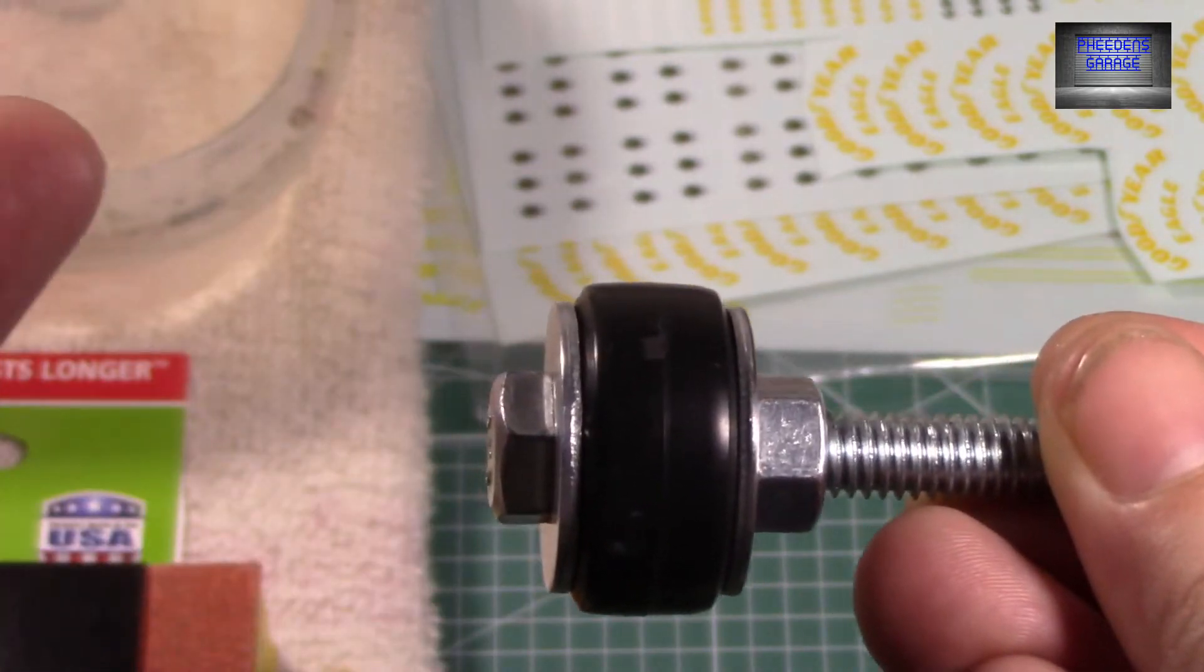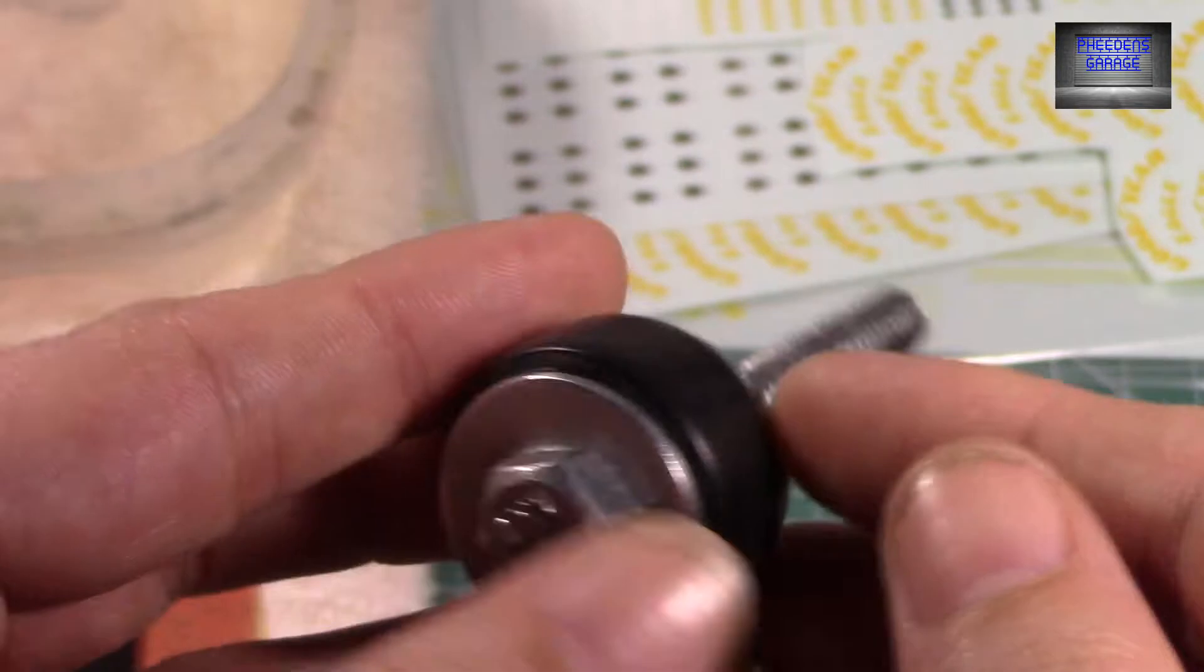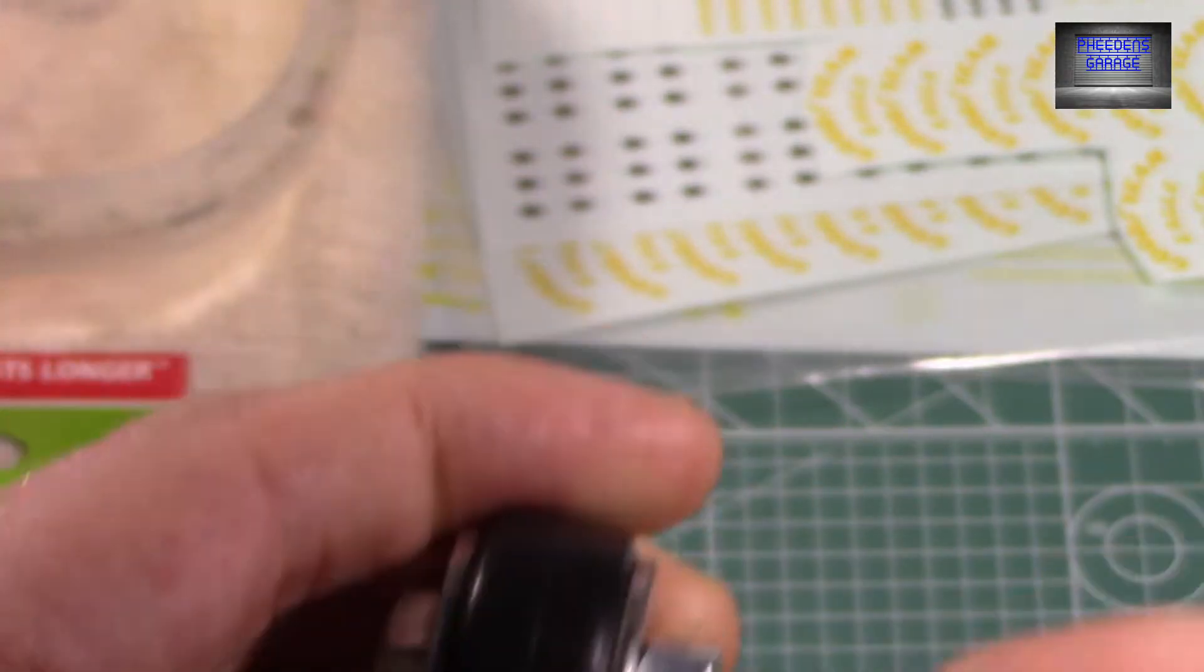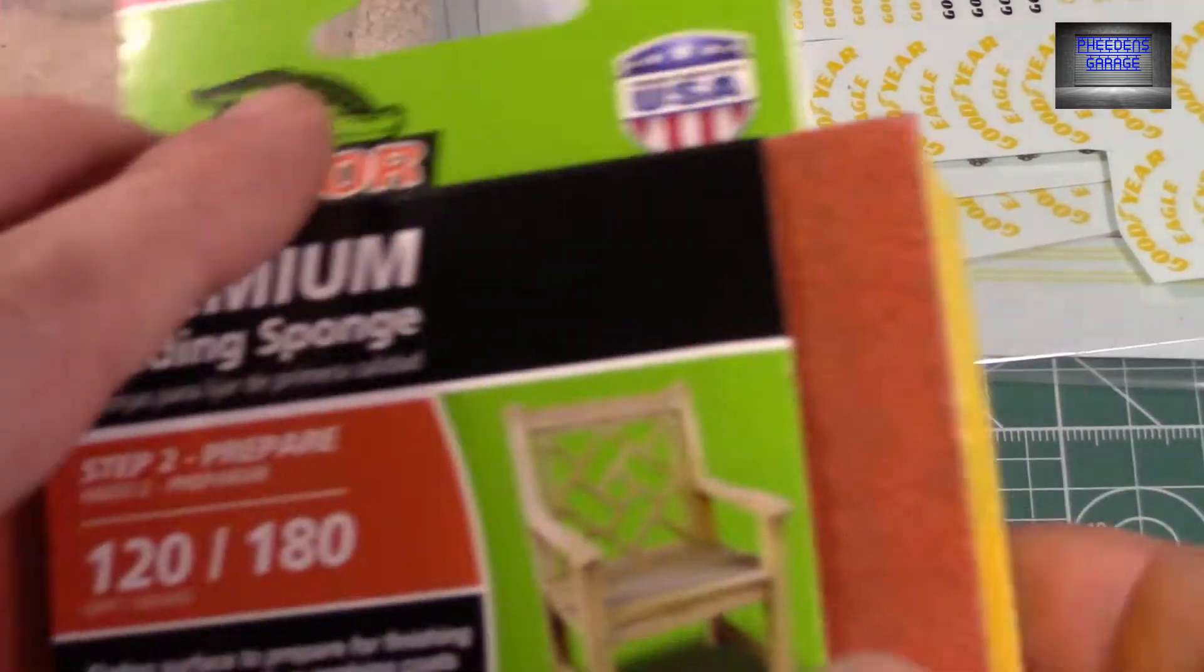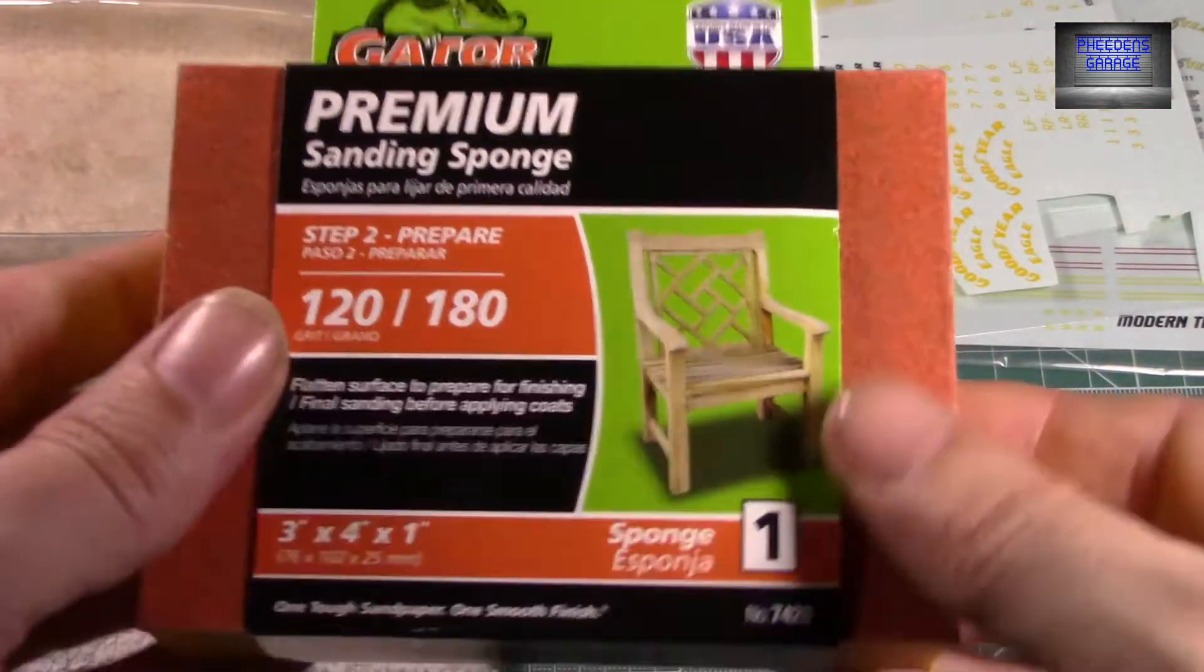I've got a bolt, a nut, and two washers, and tighten it down so the tire is squeezed in here. Pop it into your drill, and then it's best to get an actual sanding block, not a sanding sponge. But it still works.